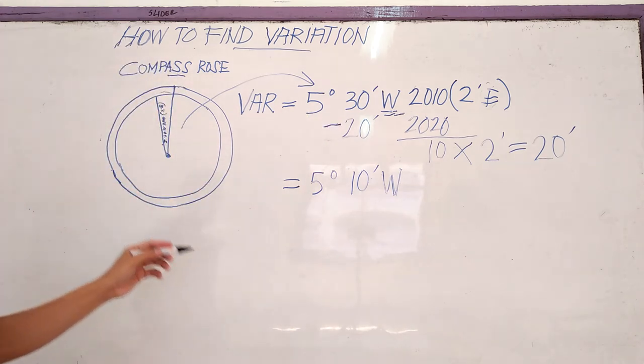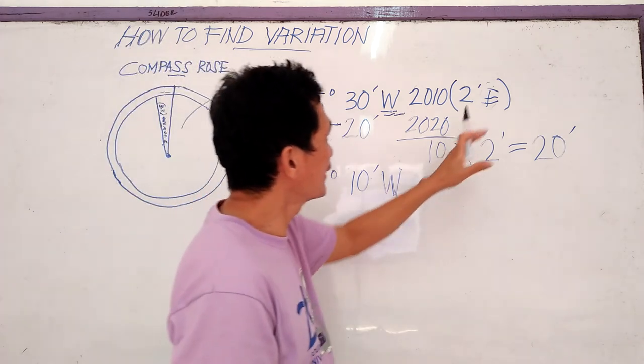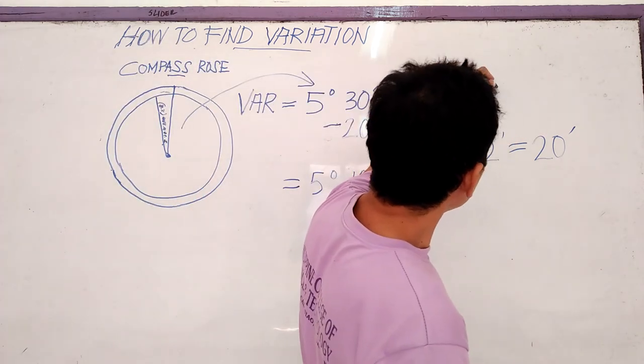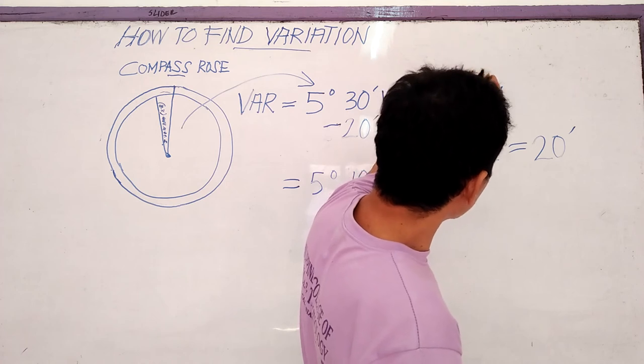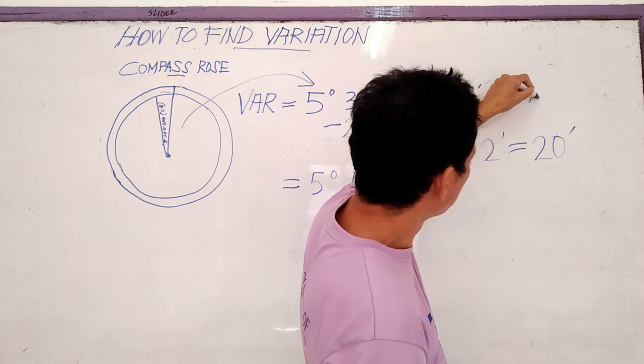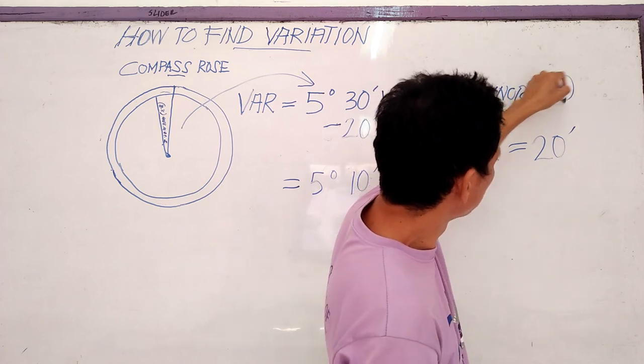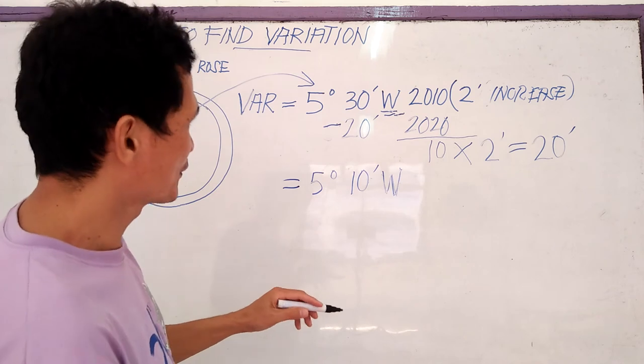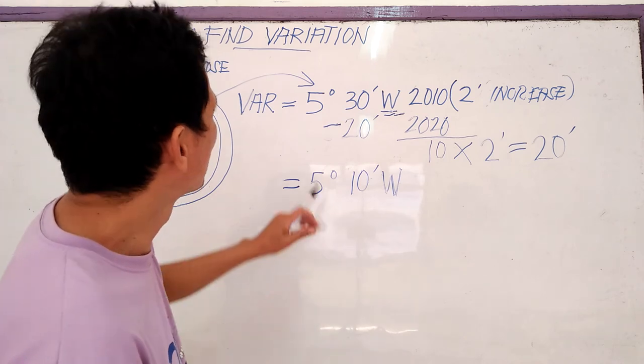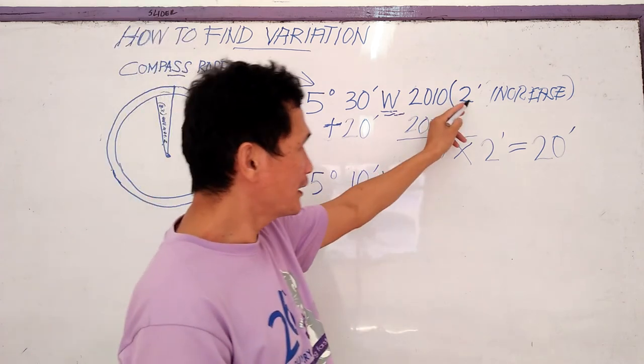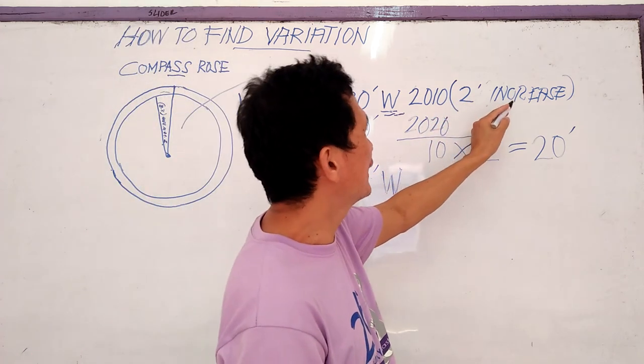If the compass was right in here, it says here that two minutes increase. So we will use the plus. Then two minutes, the annual increase.